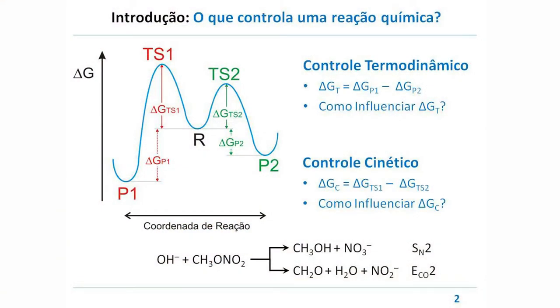Uma reação química pode ter um controle termodinâmico ou cinético, e isso vai depender das diferenças de energia de Gibbs. Se nós temos um reagente que pode fornecer dois produtos, o controle termodinâmico é dado pela diferença das energias de Gibbs entre os dois produtos, enquanto que o controle cinético depende das energias de Gibbs de ativação. Por exemplo, se o produto P2 for obtido em maior concentração, dizemos que o controle é cinético porque ele tem a menor barreira, apesar do P2 ser o produto menos estável. Poder mudar o controle de uma reação química é importante porque podemos, por exemplo, obter produtos menos estáveis que, algumas vezes, são os produtos que gostaríamos de ter.